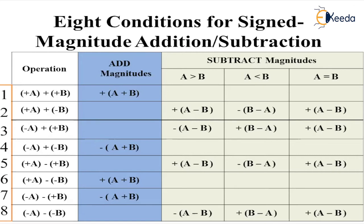In similar cases, if A is less than B, we need to perform B minus A and the result will be negative. And if A is equal to B, you will perform A minus B with a positive bracket result — that is +(A−B).